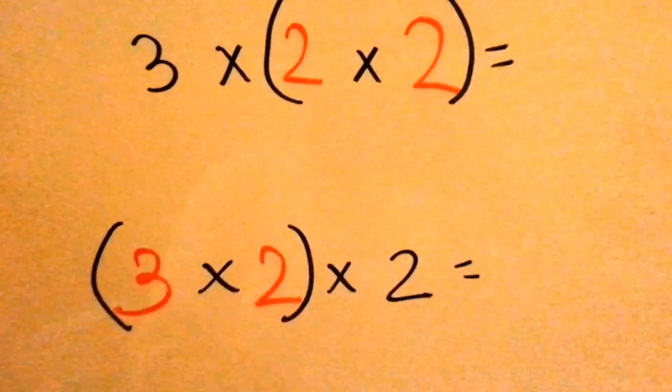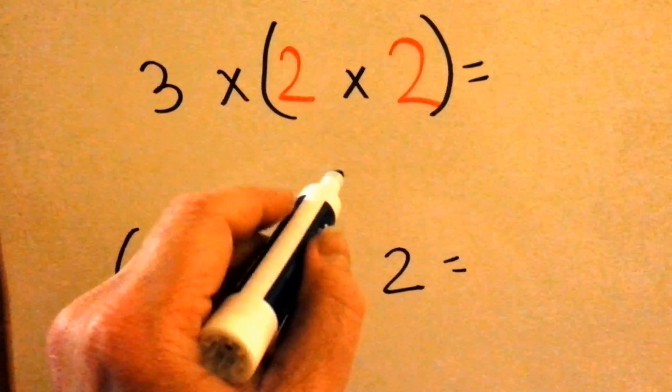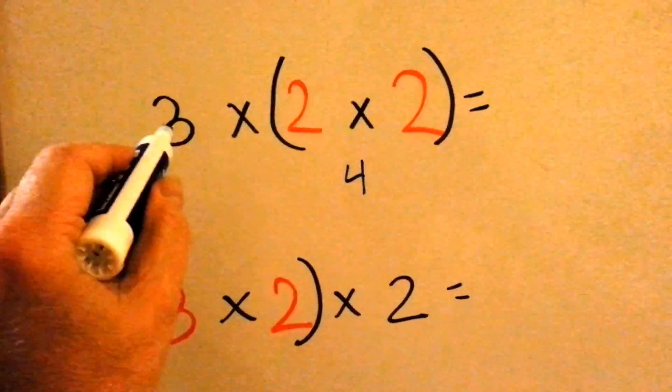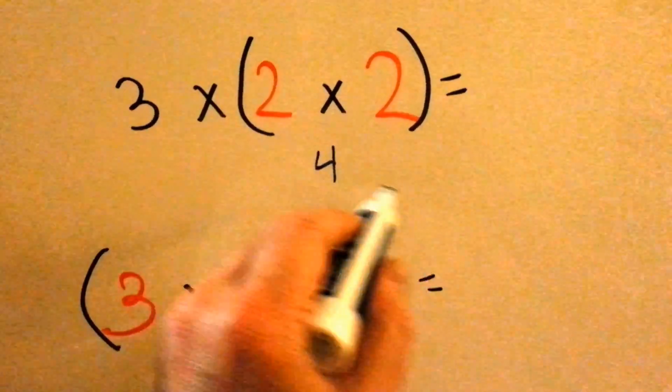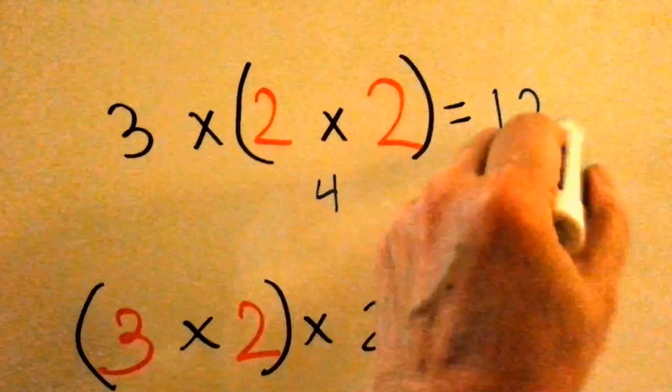Let's try this one. Parentheses first, two times two is, do you know, four. Four times three is, do you know, twelve.